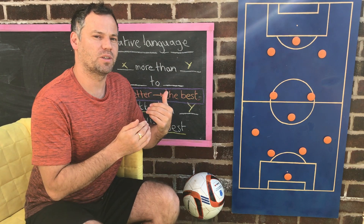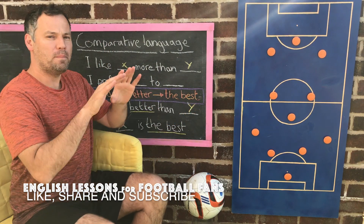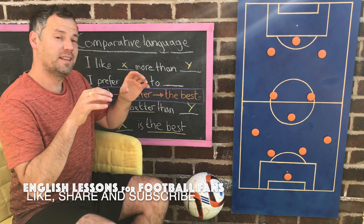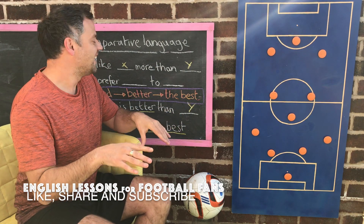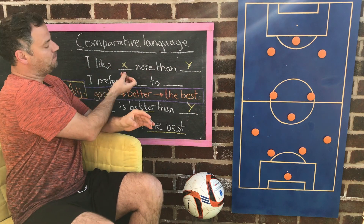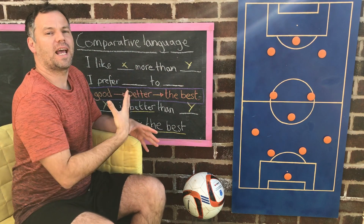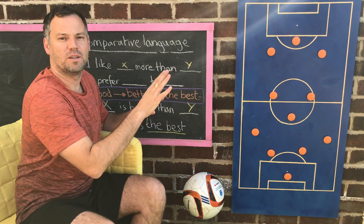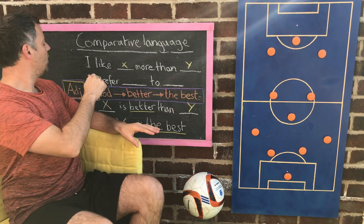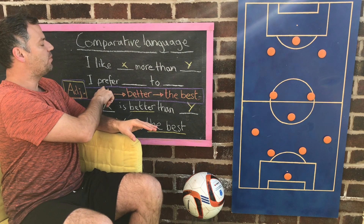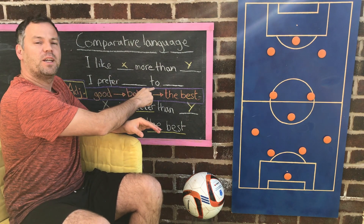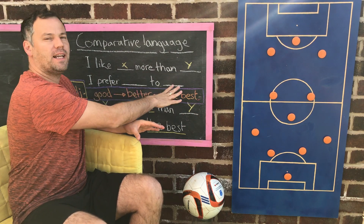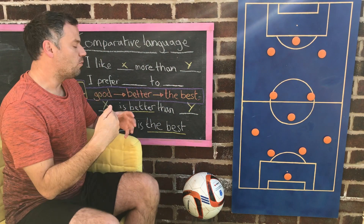First, some comparative language — basic comparative language, a beginners lesson today. So: 'I like Messi more than Ronaldo.' Or you can say 'I prefer,' and here we use the preposition 'to': 'I prefer Messi to Ronaldo.'